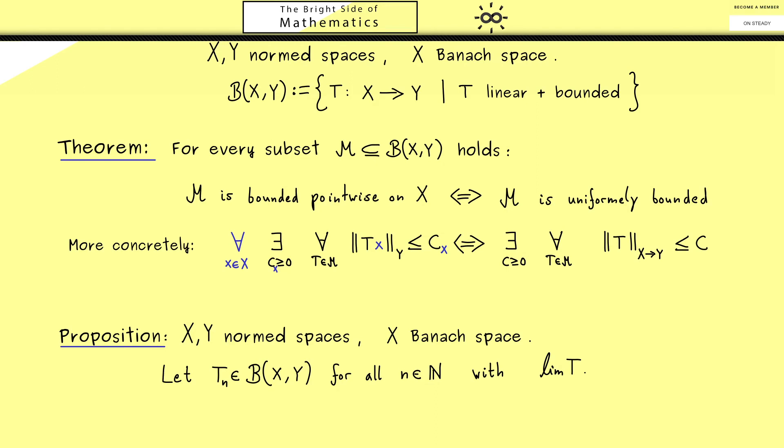The answer is we can define a limit operator which is again linear and bounded. This result is quite nice because we start with a continuous function, look at the pointwise limit, and know that the limit function is again a continuous function. In general, and you learned this in analysis, this would be wrong, but it is true when we have linear operators defined on a Banach space.